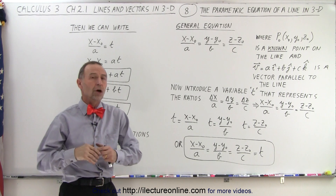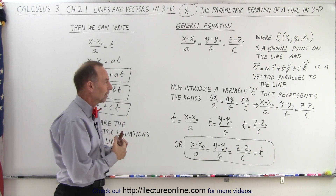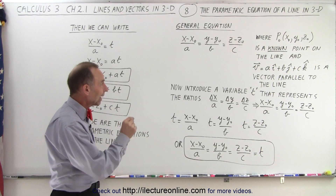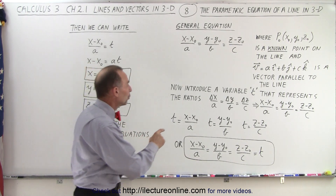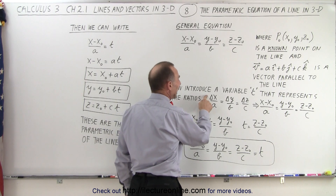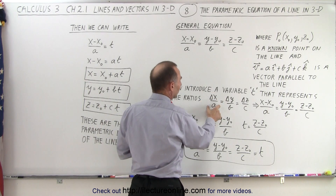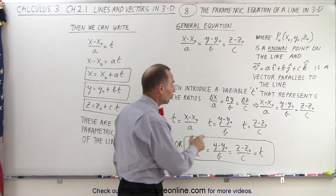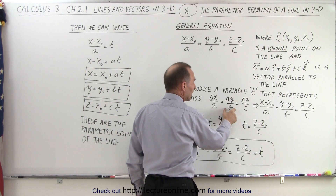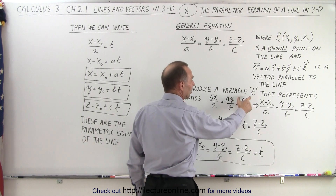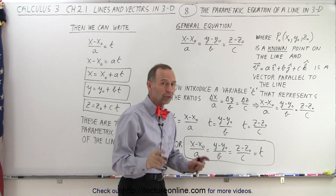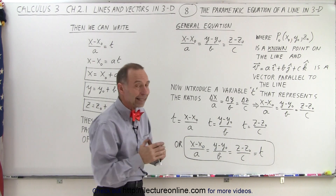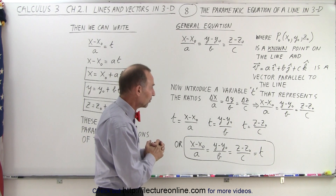So now we're going to introduce a new variable — let's call it t. We can call it anything: t, s, it doesn't matter. That variable t represents the ratios of the change in the x value between two points on the line divided by the length of the x component of the parallel vector, the change in the y components divided by the length of the y component of the vector, and the difference in the z coordinates of the two points divided by the length of the z component of the vector.